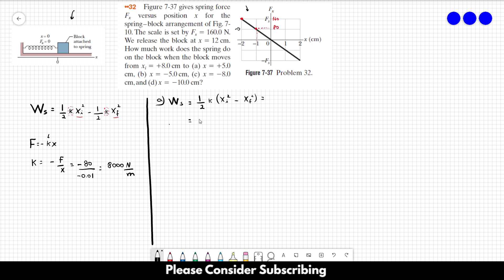So for this case, it's going to be 1 over 2 times 8,000, which multiplies the initial position, which is 8. Don't use this 12 over here, this is just too tricky, so 0.08 squared minus 0.05 squared, and the answer of letter A is equal to 15.6 joules.